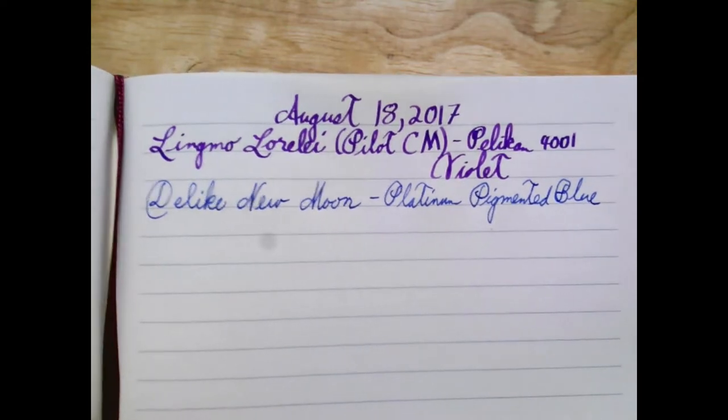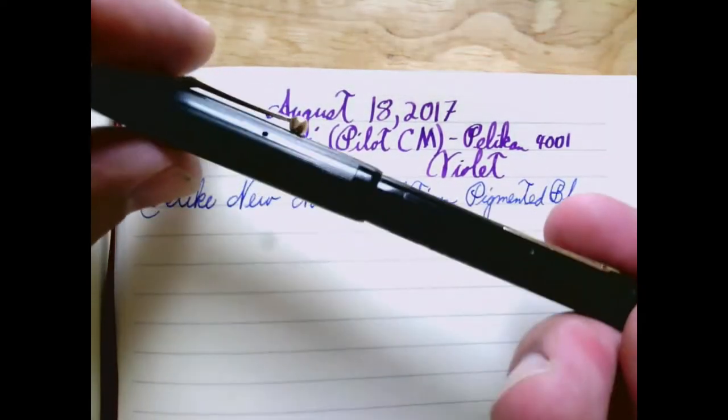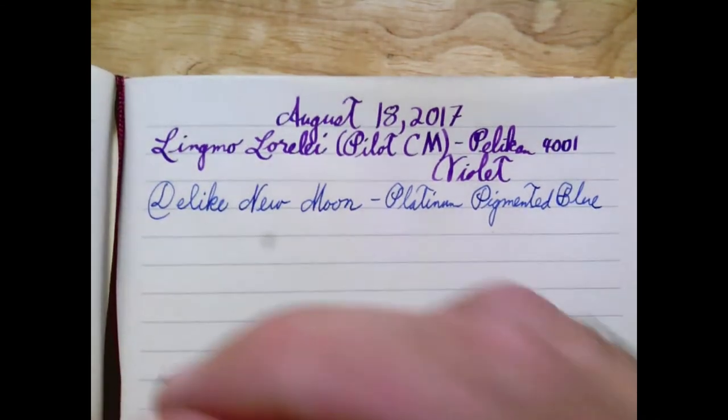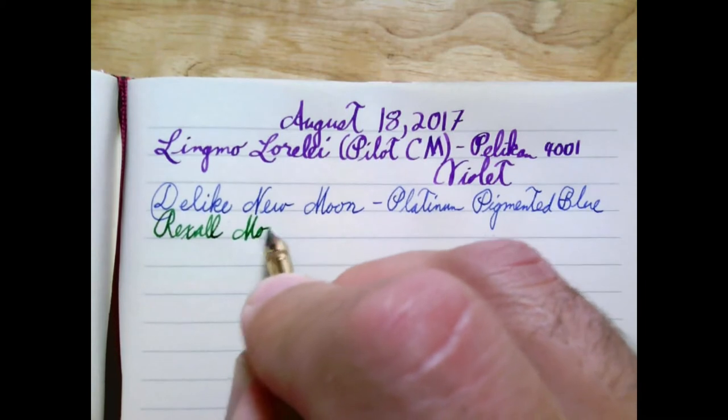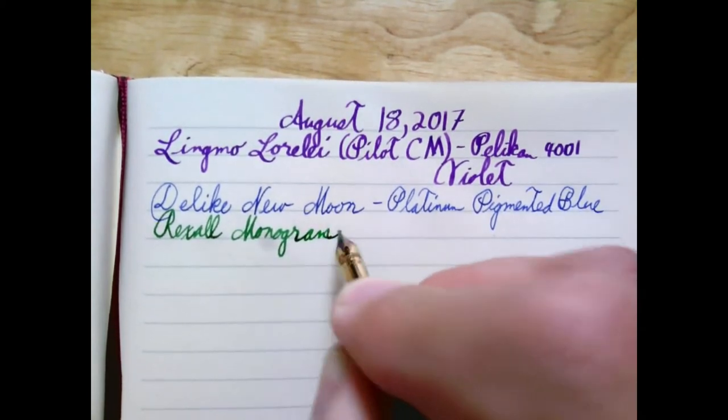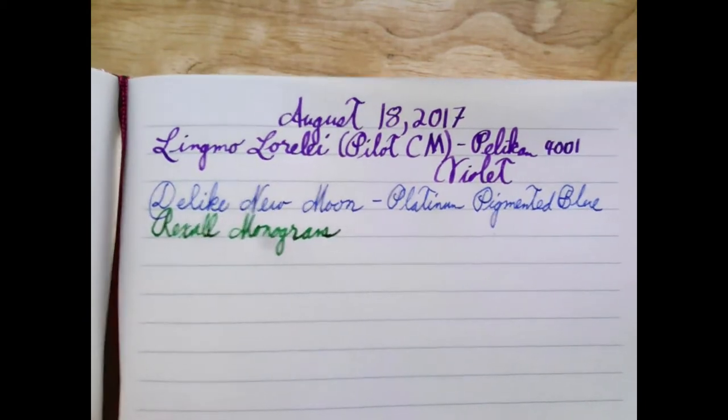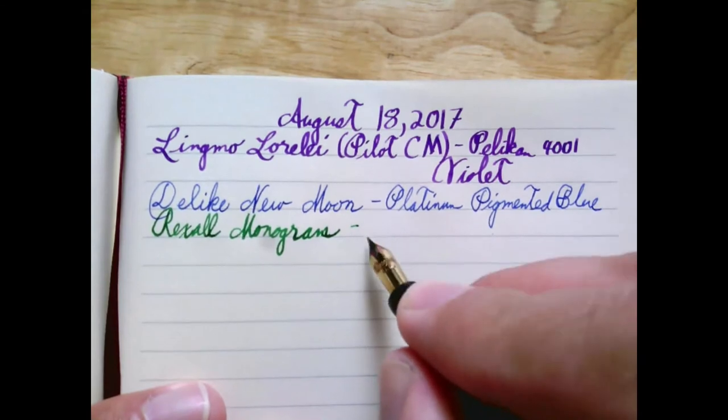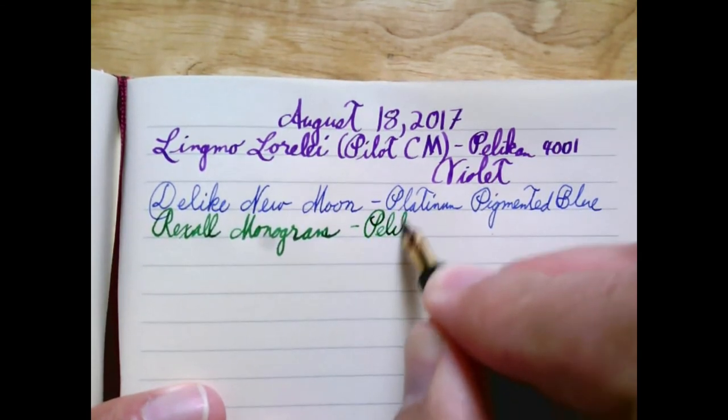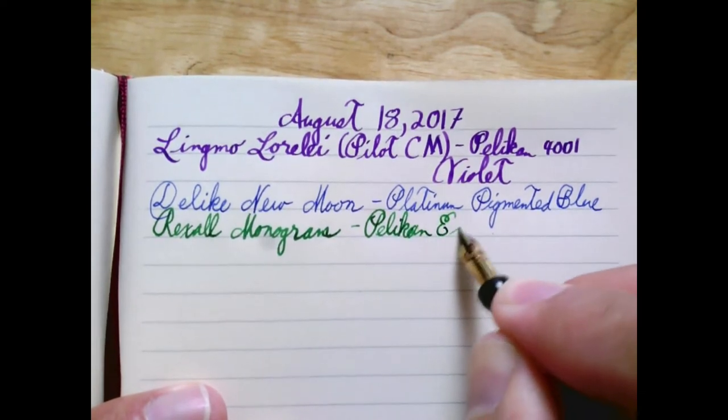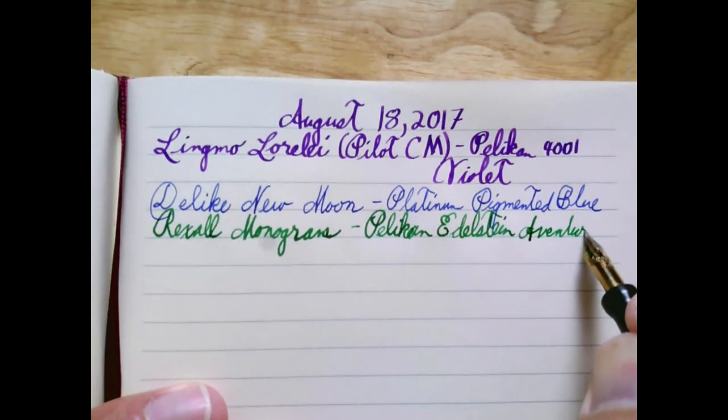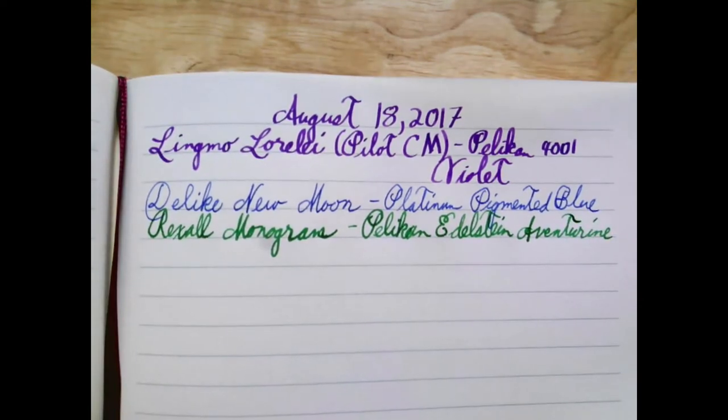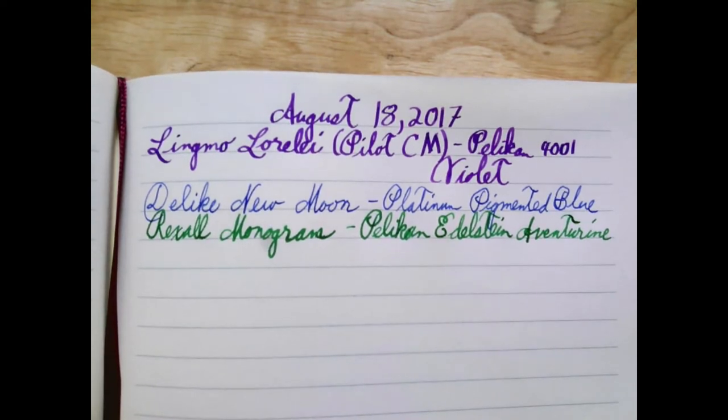This is a Rexall Monogram, which is a store brand pen made by the Monogram company. It has a surprisingly nice nib which almost seems like it's slightly oblique. The ink in it is Pelikan Edelstein Aventurin.